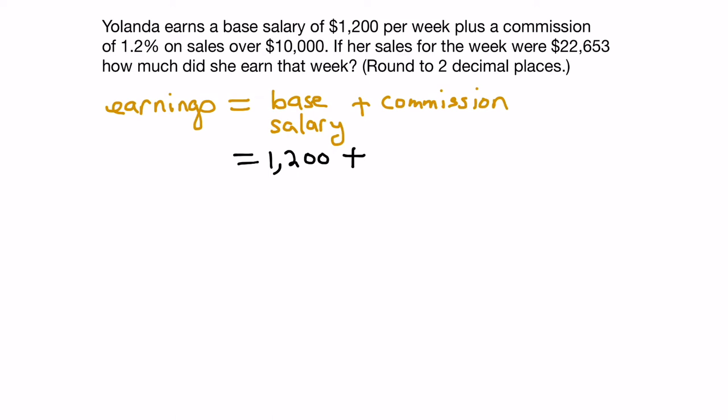So we would say this as 1.2% of, which is multiplication, and that would be $22,653 minus $10,000, because she doesn't get commission on the first $10,000. It's only over $10,000 that she gets commission.